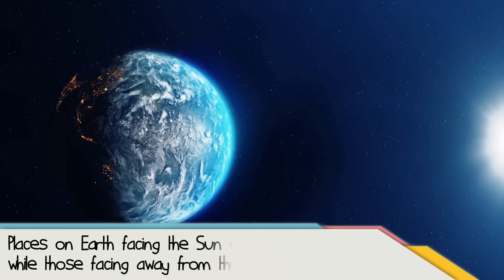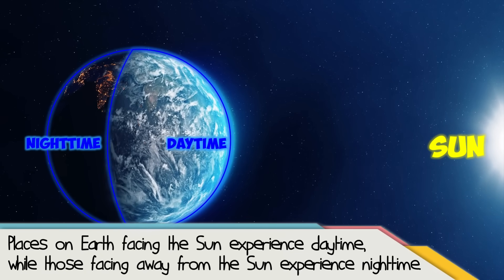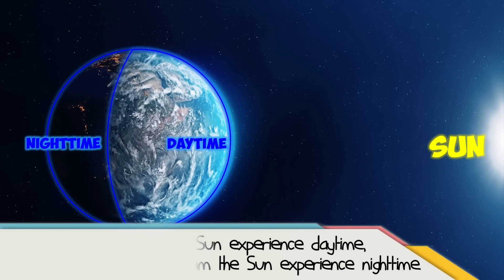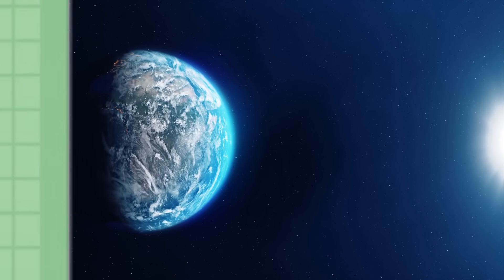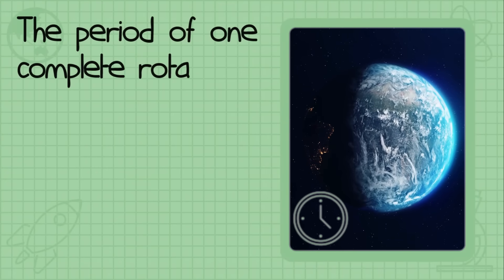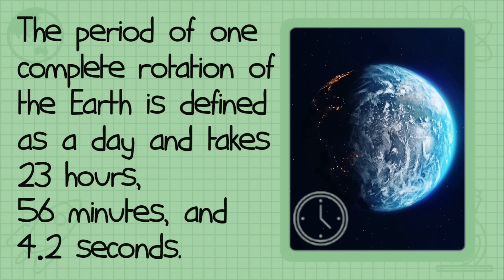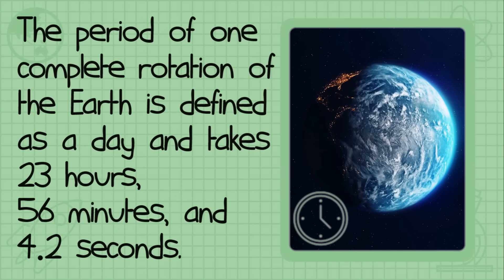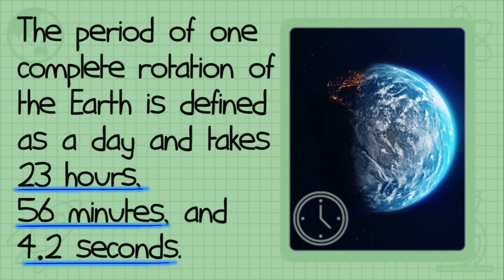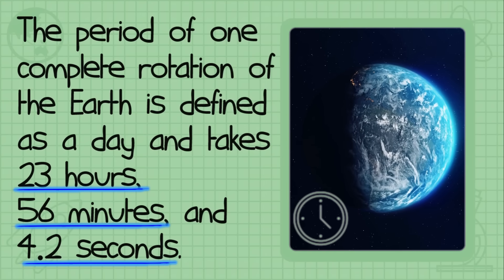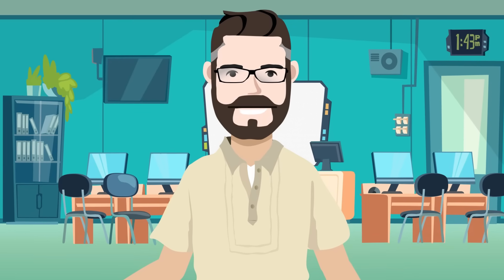Places facing the Sun experience daytime, while those facing away from the Sun experience nighttime. The period of one complete rotation of the Earth is defined as a day, and it takes 23 hours, 56 minutes, and 4.2 seconds to be exact.